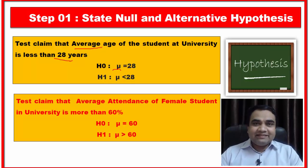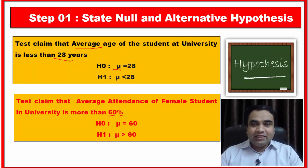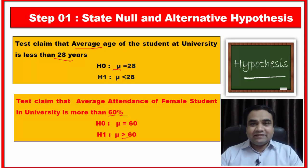Now let us take a second example. Here the test claims that the average attendance of female students in university is more than 60. Again defining hypotheses using mu, our null hypothesis H0 is mu equals 60, and our alternative hypothesis is mu is greater than 60.